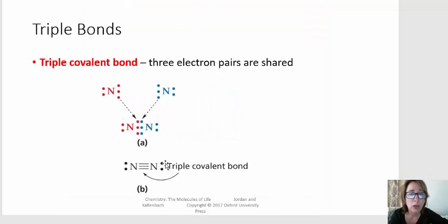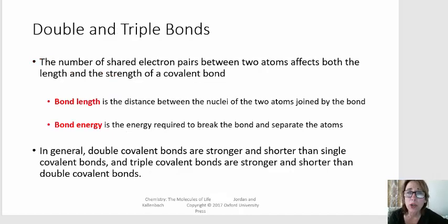So there are one, two, three, four, five, six, seven, eight electrons around each nitrogen. So double and triple bonds occur when you have to share more to fulfill the octet rule for each atom.